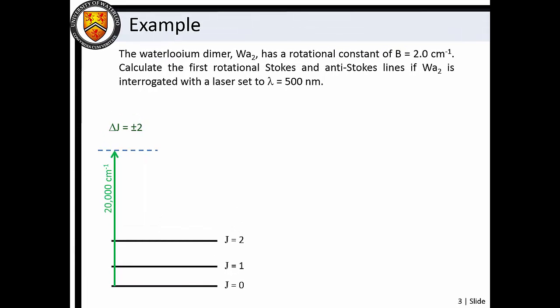Let's calculate the first Stokes and anti-Stokes lines for the fictional water-lunium diameter. Note that the molecule has a rotational constant of b equals 2.0 reciprocal centimeters, and it is interrogated with a laser of 500 nanometer wavelength.